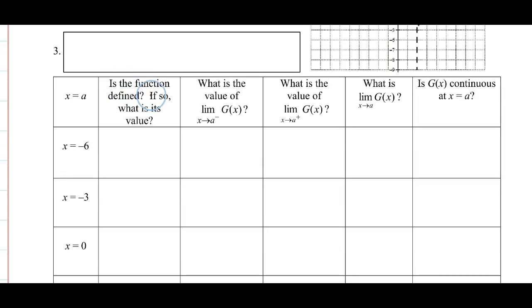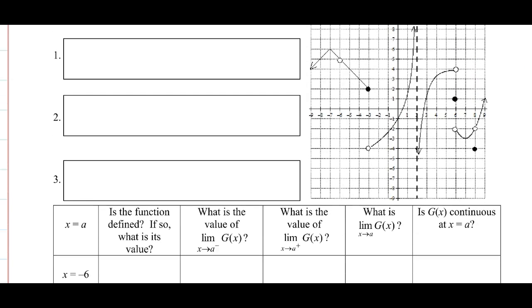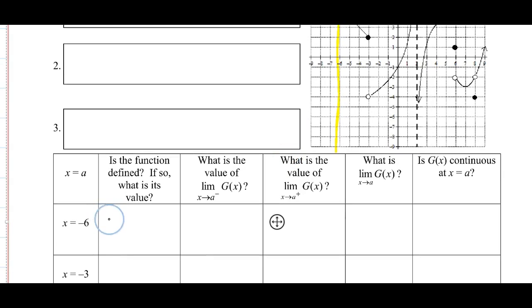We're given a graph and asked to find: is the function defined, and if so what is its value? I'll do the first two — at x = −6 and x = −3 — with you, then ask you to complete the rest. At x = −6, there's a hollow point, indicating the function is not defined there. So the answer is: no, it is undefined.